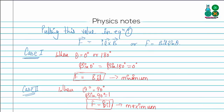Case one: when θ = 0° or 180°, sin 0° = sin 180° = 0, so force equals zero — this is the minimum force on the conductor. Case two: when θ = 90°, sin 90° = 1, and the force F = BIL, which is the maximum force on the conductor.